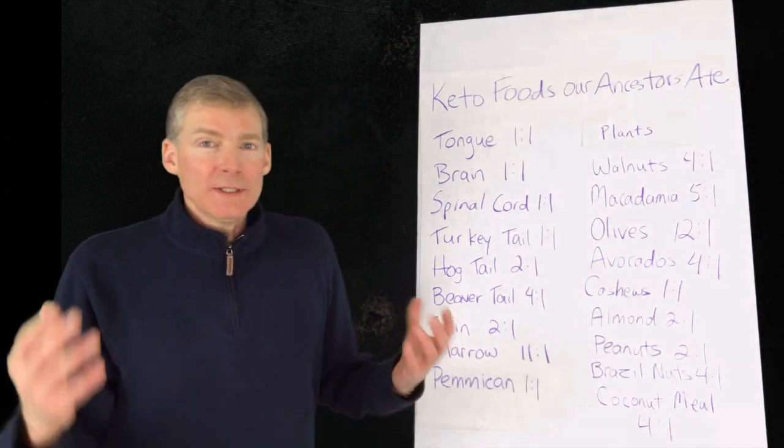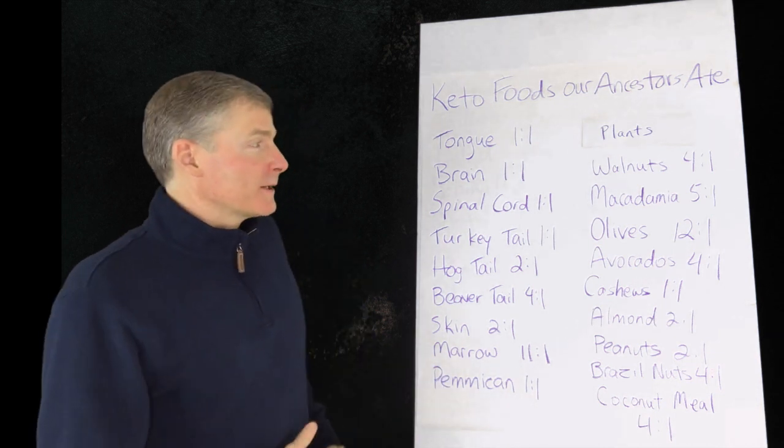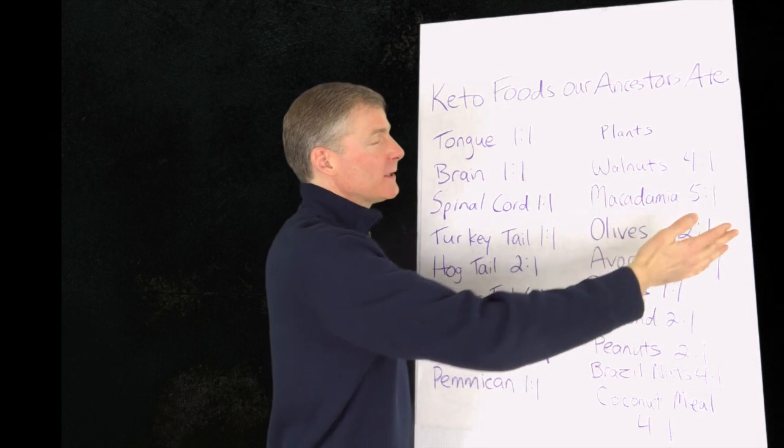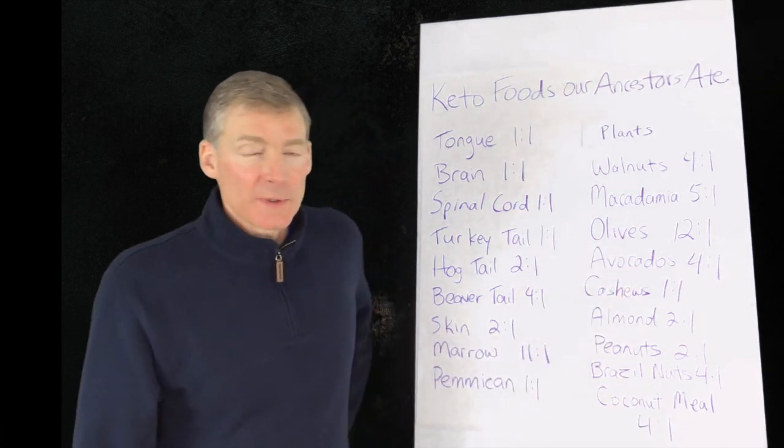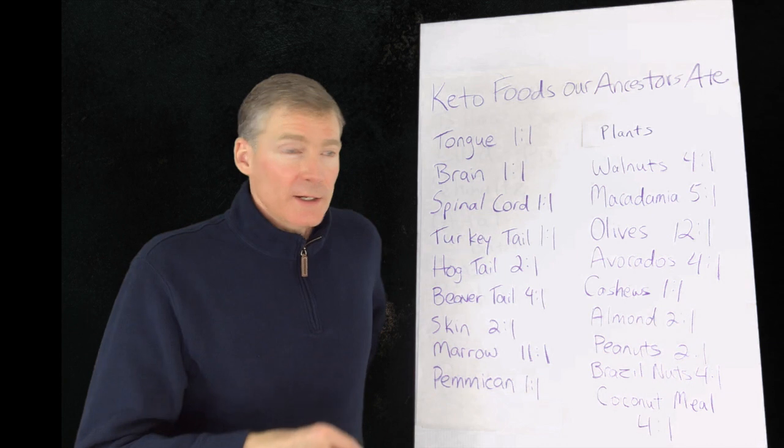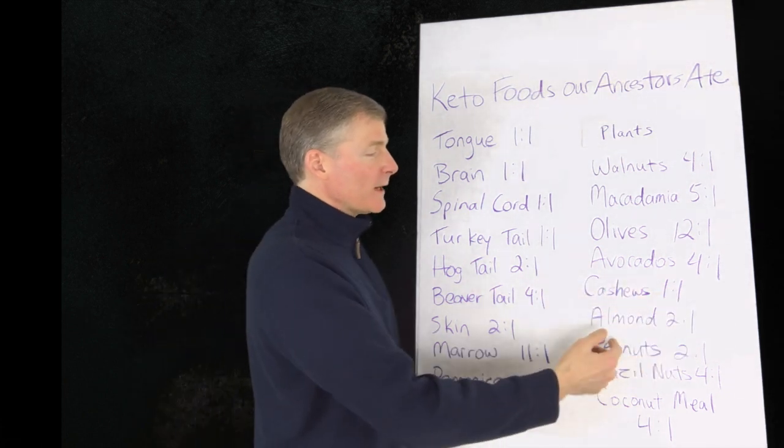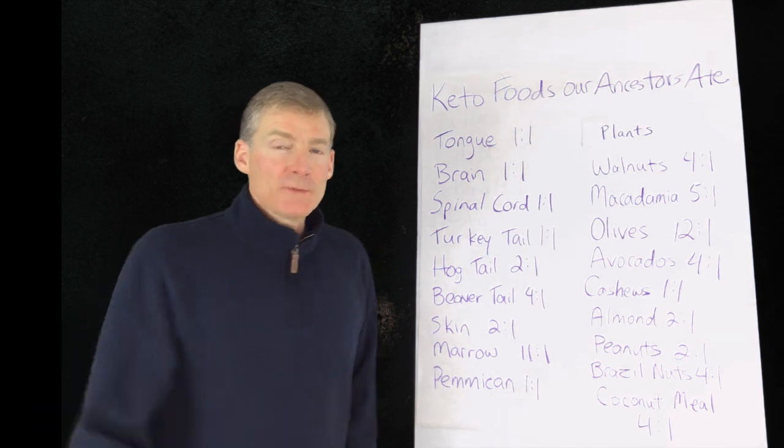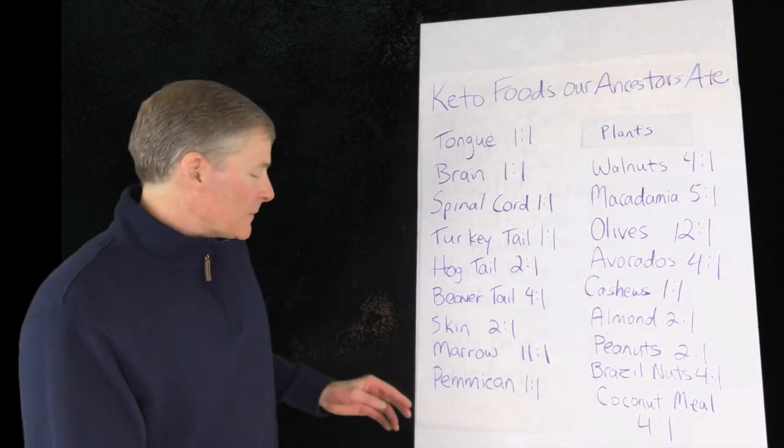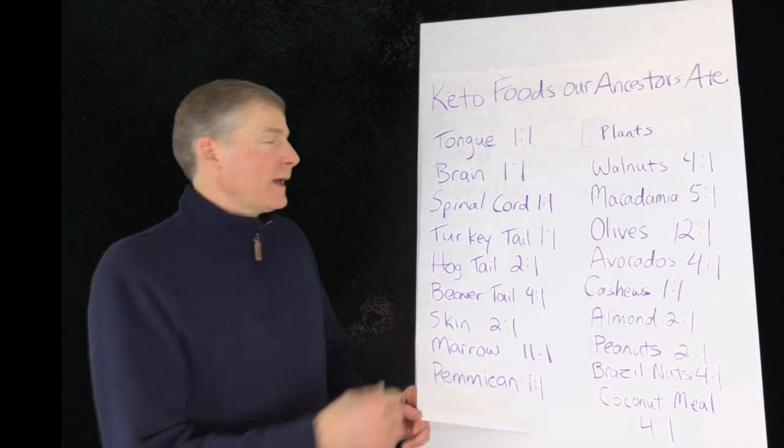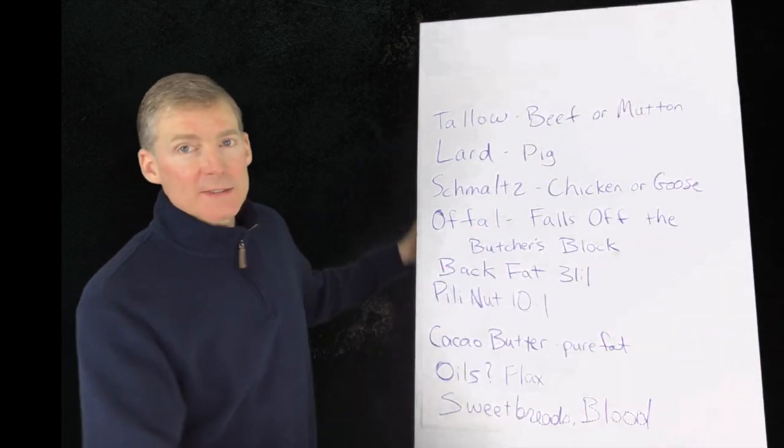Here are plants. Now, nuts and seeds are ketogenic. Not all of them, but you can use Chronometer to find out what nuts and seeds are ketogenic. So walnuts are four to one, macadamia nuts are five to one, olives are twelve to one, avocados are four to one. I've seen some olives that are not ketogenic because they put various other food items in there, but I did find some that are twelve to one. Cashews are one to one, almonds are two to one, peanuts two to one, brazil nuts four to one. And then the coconut raw fresh coconut meal is four to one. So our ancestors, no matter where, had access to some of these foods, and they would eat these and get into ketosis without fasting.